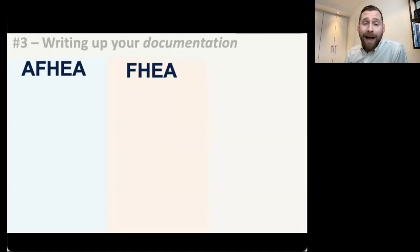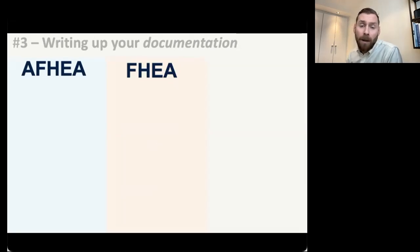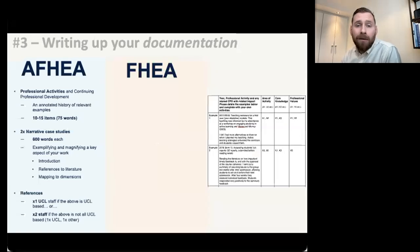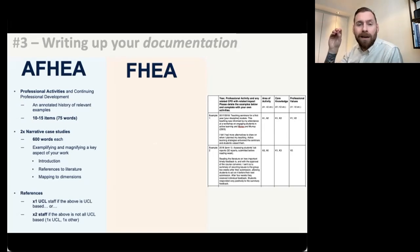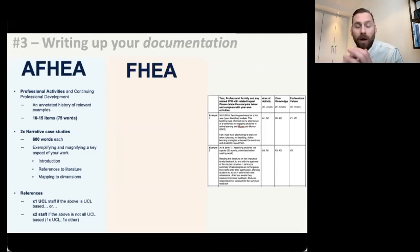We've now spoken about the descriptors, which is the level you're applying at, and the dimensions, which is essentially the rubric. The final thing we're going to explore is the documentation that you will be preparing. This section is all about what you are actually going to submit. For the associate fellowship, there are three main areas. The very start asks about you and your experience — some general things. But the three main chunks are: a record of your professional activities, narrative case studies, and then the references.